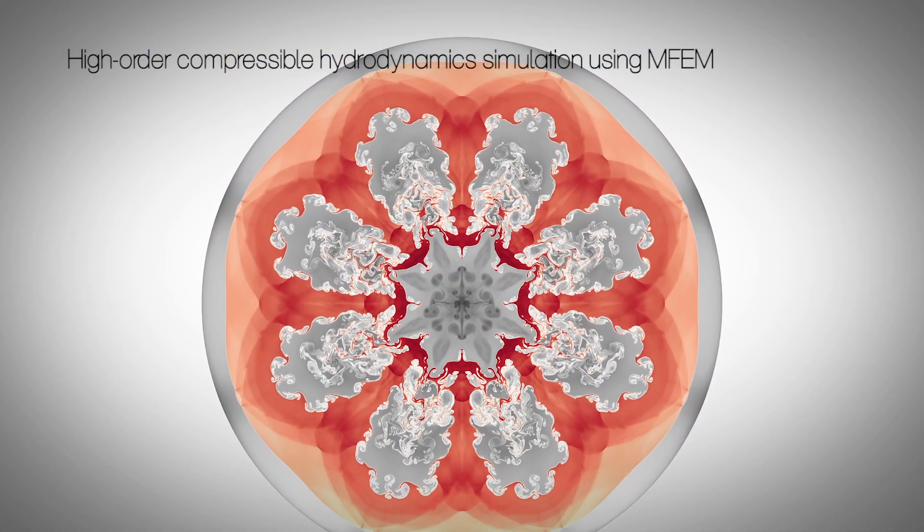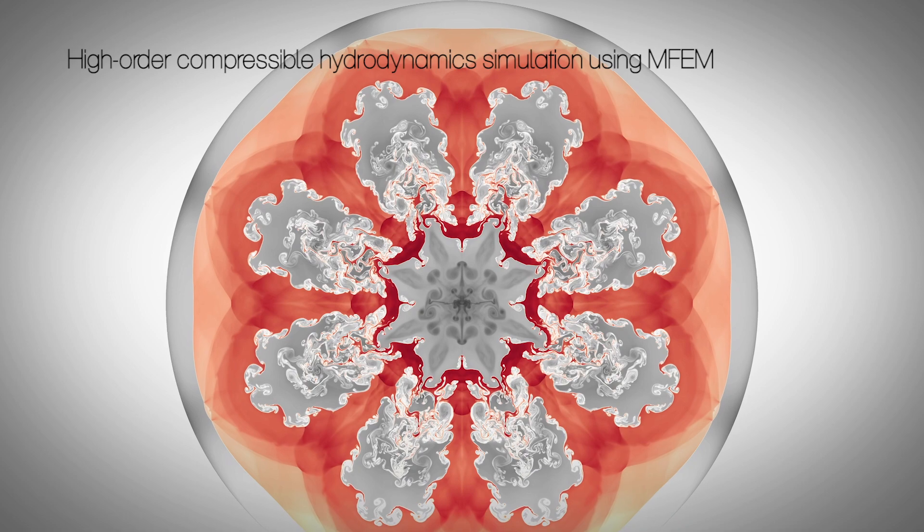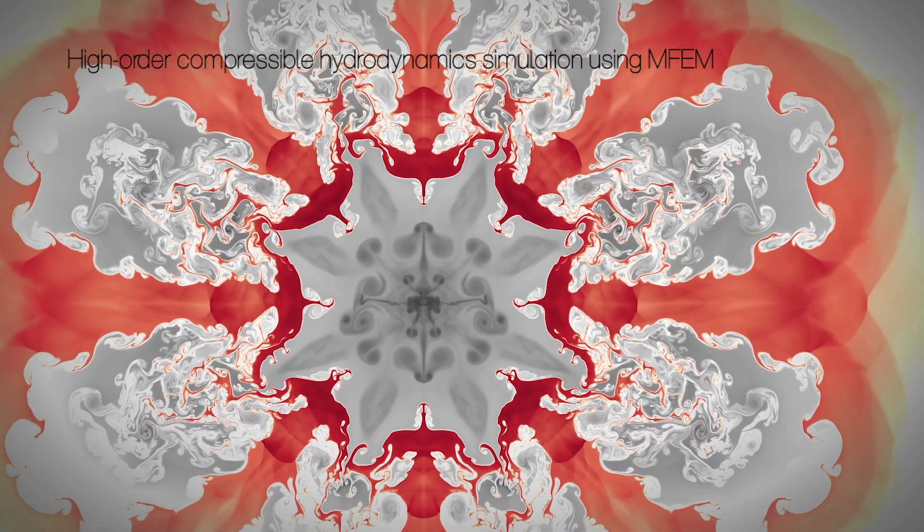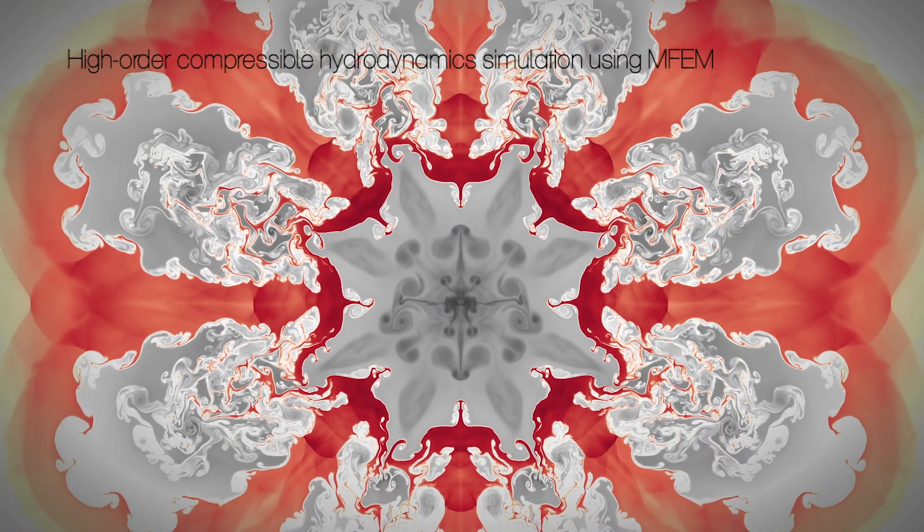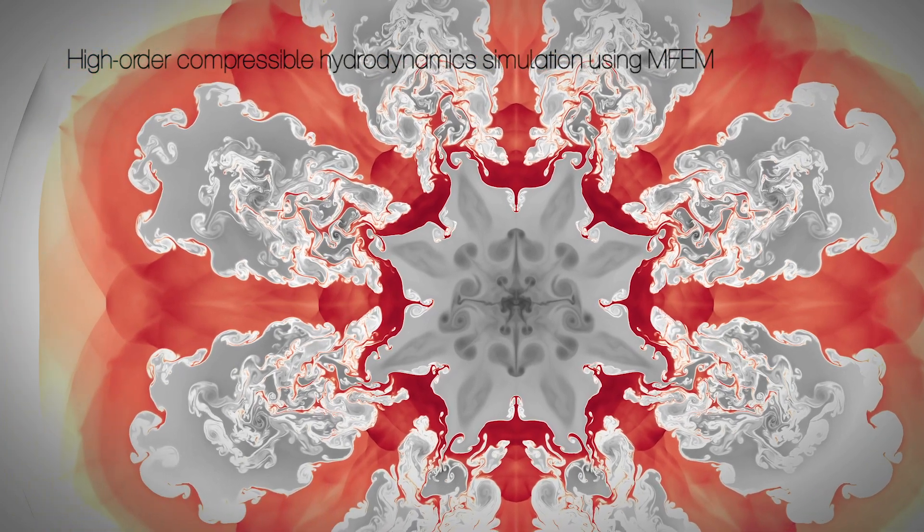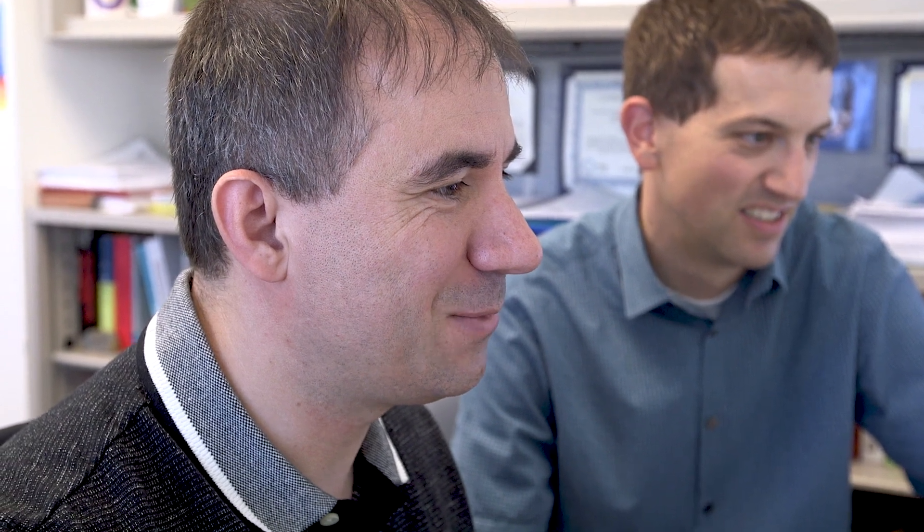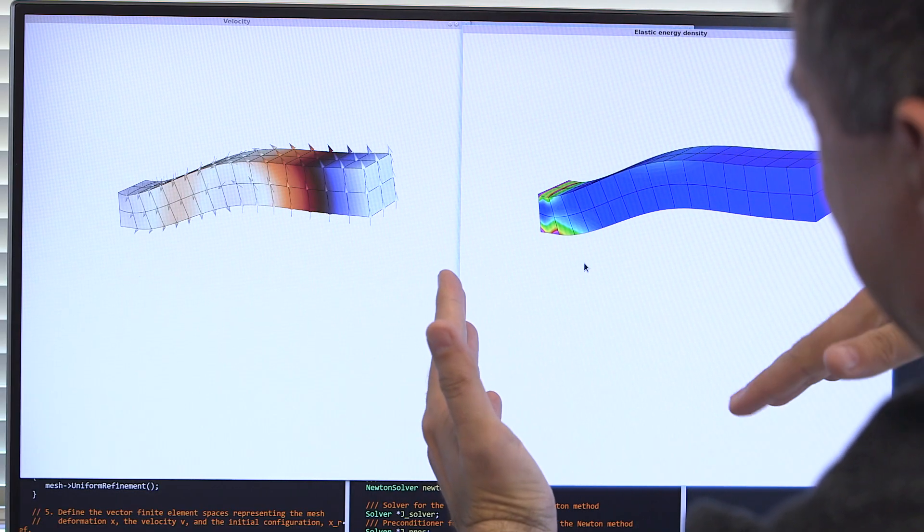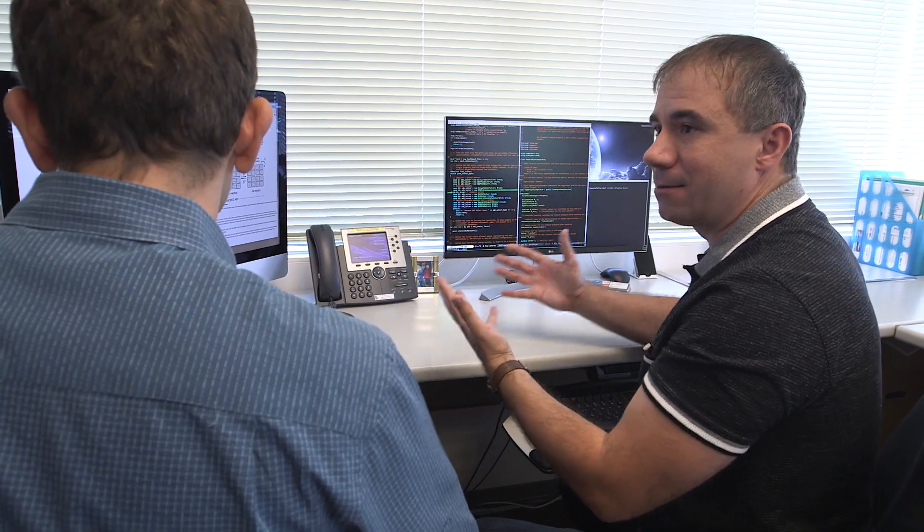MFEM is one of several long-term projects in CASC, where we are focusing on research in advanced high-order finite element discretizations and applications of high-order methods. One of the reasons this research is interesting and challenging is because MFEM is a library that is trying to impact many applications. And so even if you know how to perform adaptive mesh refinement or have a very good preconditioner for a particular application that takes advantage of application information, when you provide these methods as part of a library for many users, you need to be much more robust, much more scalable, and much more general.